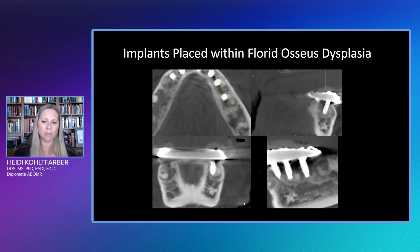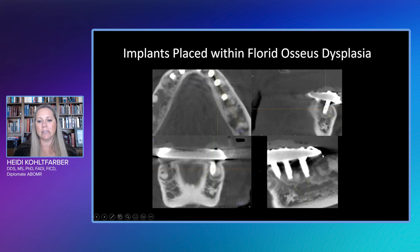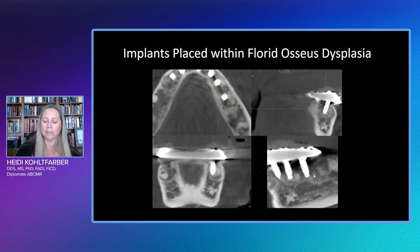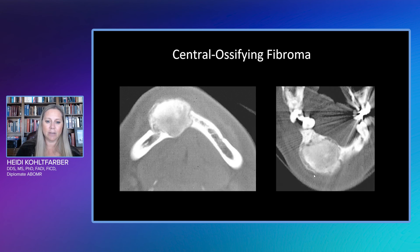Here we can see some implants placed right within the benign fiber osseous lesions, and this particular implant overdenture was loose — the implants were loose. So that's kind of a sad story.